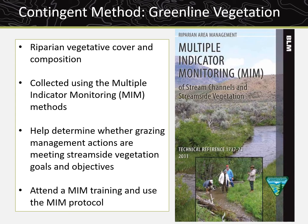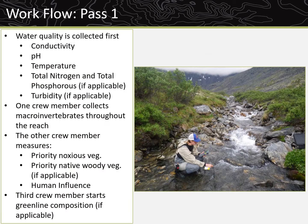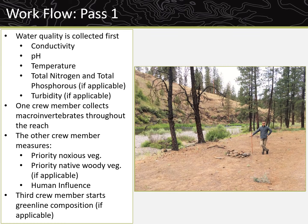To collect these indicators, a third crew member — a field botanist — is added to crews and they attend a MIM training. A suggested workflow for collecting all of these measurements is located in Technical Reference 1735-2 field protocol in Appendix F. Generally, a reach is sampled by a crew of two or three and is completed in a day. Sample workflow is highly dependent on the size and difficulty of the stream, but in general sampling can be broken up into five passes throughout the reach. Once the reach has been set up and monumented, water quality is collected first. Then the first pass is made with one crew member collecting macroinvertebrates and the other collecting frequency of occurrence of priority noxious and priority native vegetation and human influence.